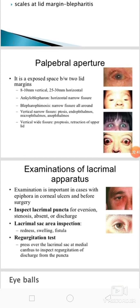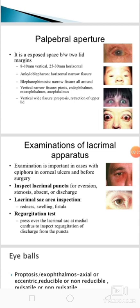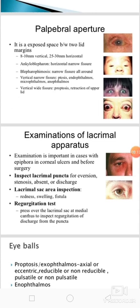Then what about the palpebral aperture? It is the exposed space between the two lid margins. Vertically it is 8 mm in length, whereas horizontally it is 25 to 30 mm. In ankyloblepharon, a horizontal narrow fissure is present. In blepharophimosis, there will be narrow fissure all around. In case of vertical narrow fissure, it occurs in case of ptosis, enophthalmos, microphthalmos, and anophthalmos.